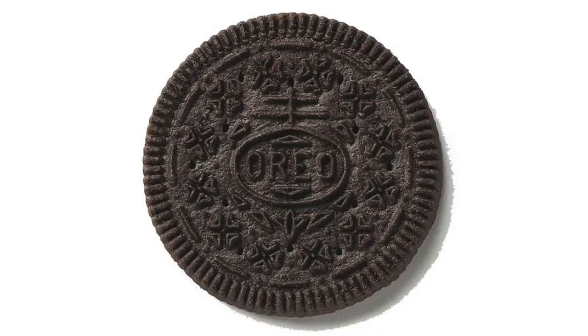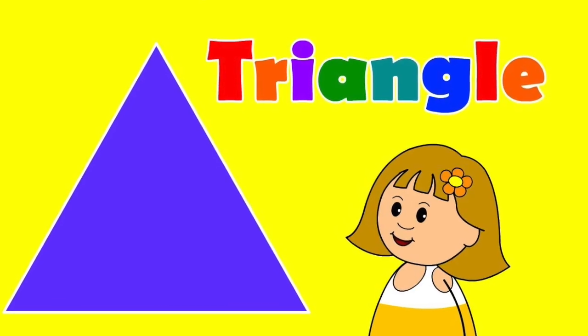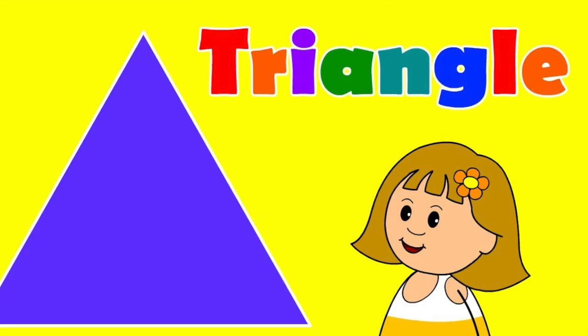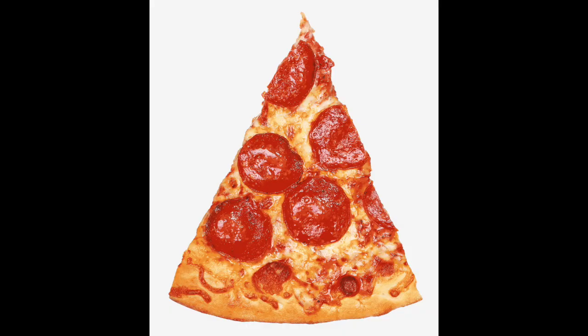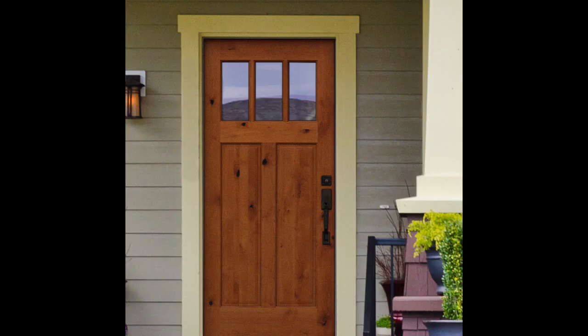Circles have no sides, no, no, no. They look like a pizza or an Oreo. Triangles have three sides. They honestly look like a pizza slice. Rectangle sides, they got four. They look like a dollar bill or a door.